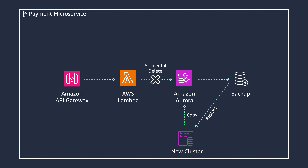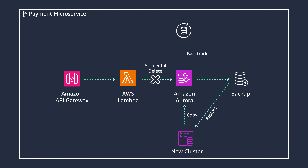You can then copy your desired information back to your original cluster. If using a supported version of Aurora MySQL, once enabled, Aurora has a backtrack feature that essentially rewinds your database cluster to the time you specify, up to 72 hours. If your applications cannot be stopped or paused briefly, backtracking should not be used, as it causes a brief database disruption.